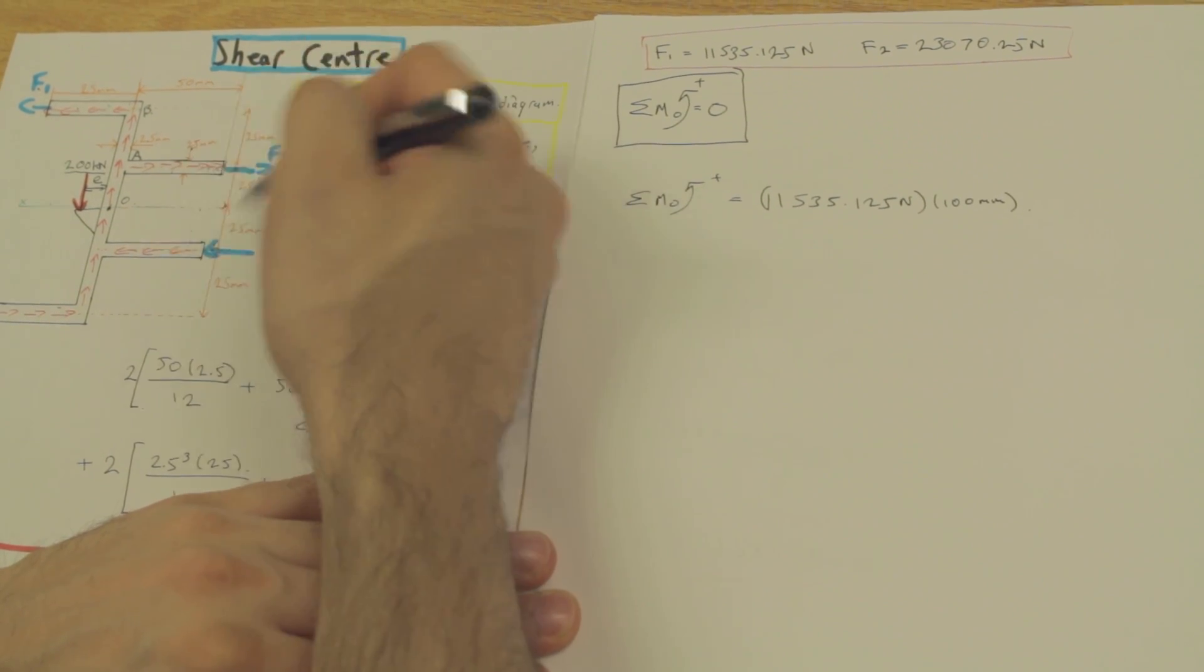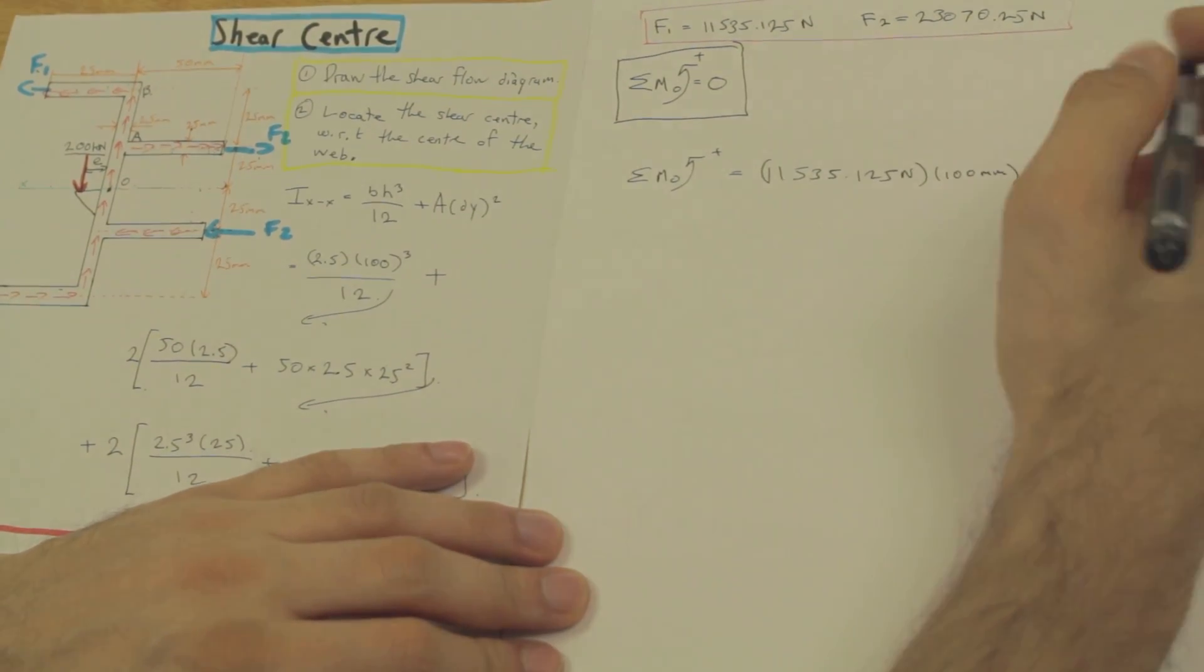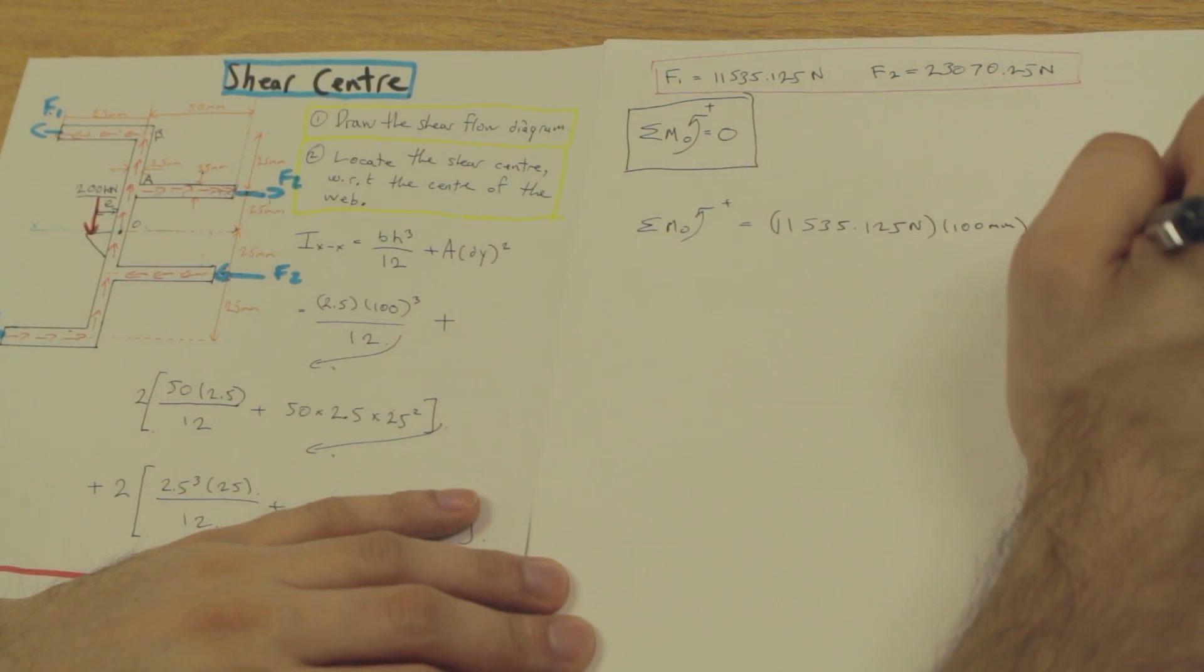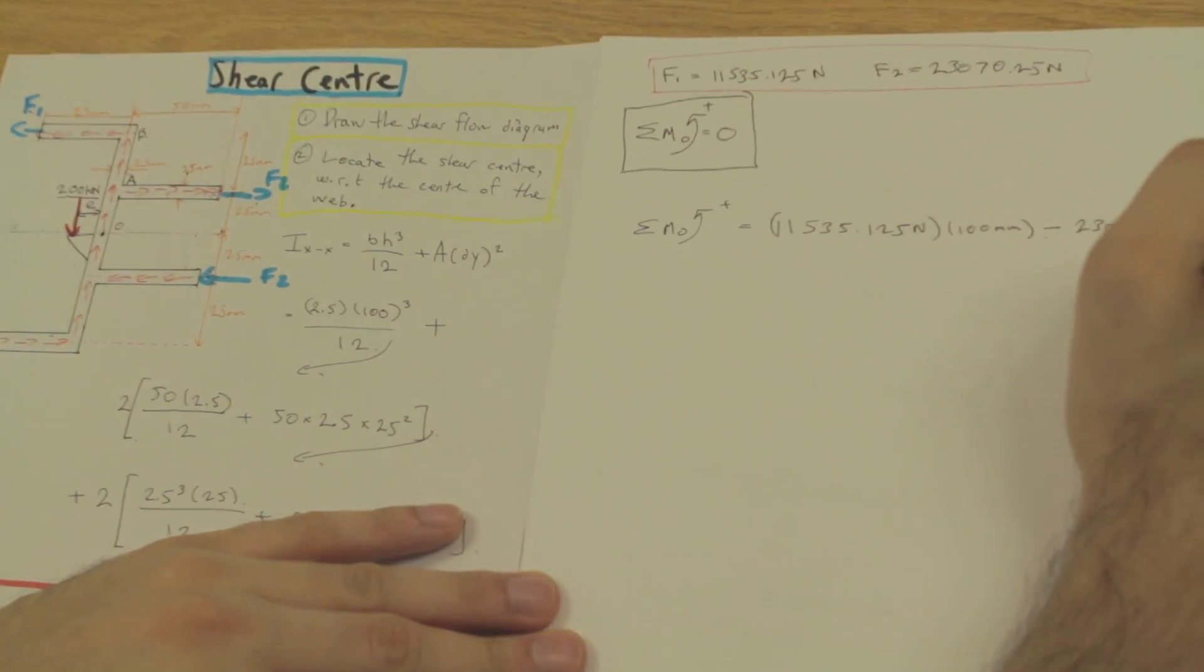So next we have a negative moment acting in the other direction. So we're going to start that off with a negative, and F2 is 23,070.25, and the distance between these two is 50 millimeters.